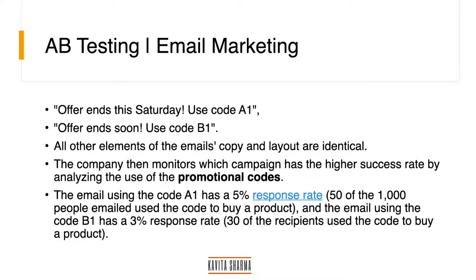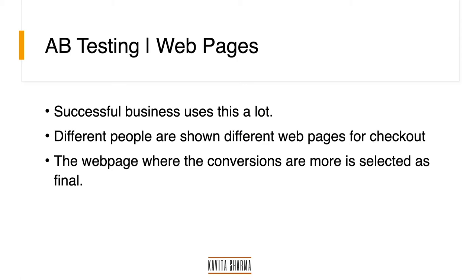Let's talk about one typical use in email marketing. One email goes out to people saying 'This offer ends on this Saturday — use the code A1.' Another one goes out saying 'Offer ends soon — use the code B1.' The marketing people then check which code is used more. The response for code A1 was greater than B1, which shows that the email with 'offer ends this Saturday' is much more effective.